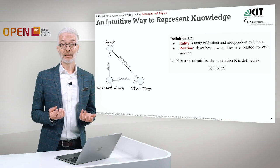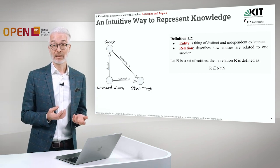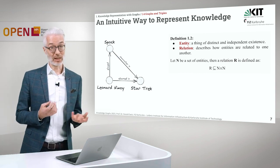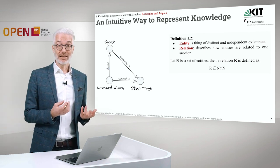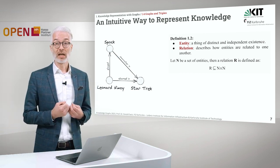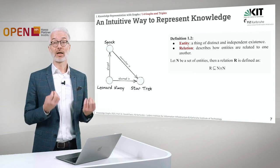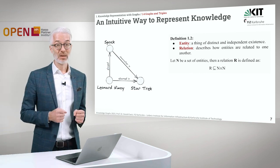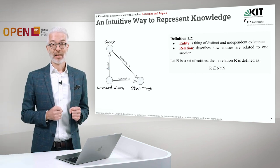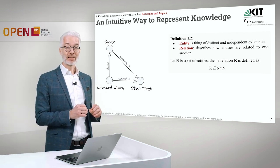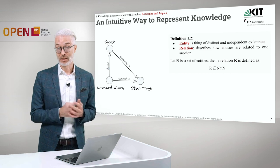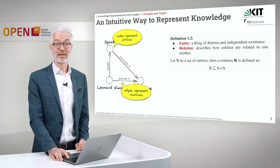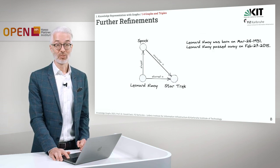What do these nodes represent? Usually these nodes represent entities. An entity is a thing of distinct and independent existence — these are things we can talk about, we can make statements about. Usually entities are connected to each other via relations. A relation describes how entities are related to one another. If N is a set of entities, then a relation r is defined as a subset of N times N. So nodes represent entities, and edges represent relations.